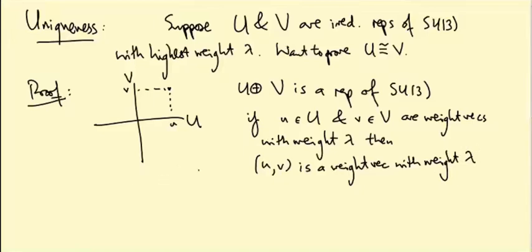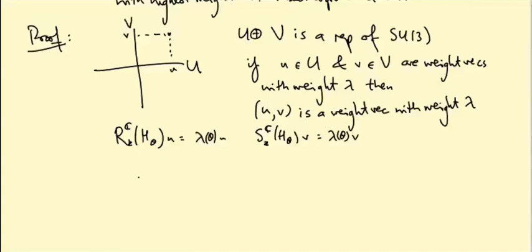So why is this? This is because being a weight vector with weight lambda means R_* composed with H_θ of u equals λ(θ) u and—oh, we should give the representations names. I'll call this one R and this one S. So S_* composed with H_θ of v equals λ(θ) v for all θ. So if I just apply the direct sum representation, then R direct sum S_* composed with H_θ applied to (u, v) is just what you get by sticking the H_θ in both of these simultaneously. So this is not a tensor product representation. I don't need the product rule here. This is just the direct sum.